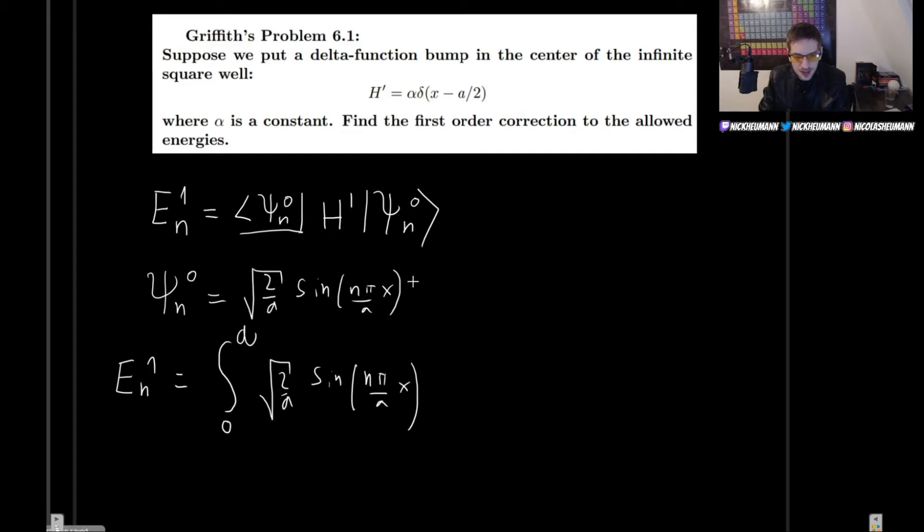And then we put in here the Hamiltonian, which is going to be alpha delta x minus a over 2. And then we have to include the ket, which will be, once again, square root of 2 over a sine of n pi over a x. And, of course, don't forget about the dx.